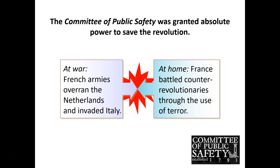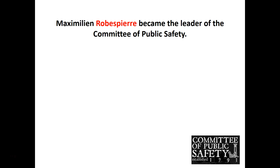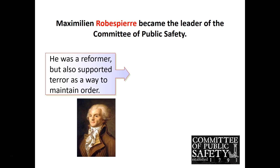The leader of the Committee of Public Safety is Maximilien Robespierre. Robespierre believed in a lot of the ideals of the Revolution and was considered a reformer, but he also supported — unfortunately for many — using terror as a weapon, as a tool, to enforce the ideas of the Revolution and to maintain order.